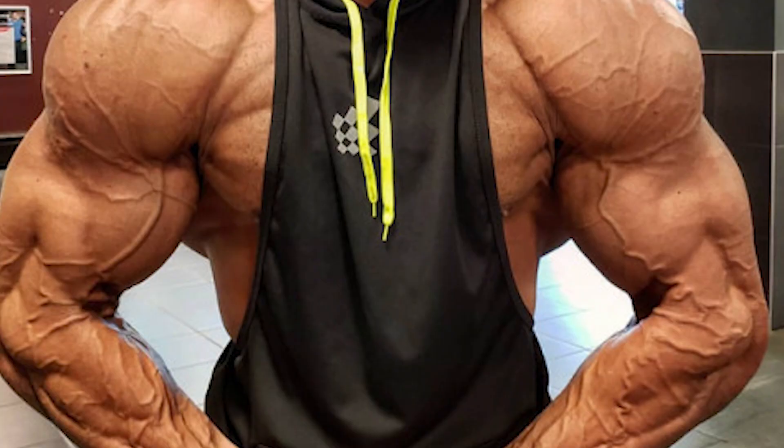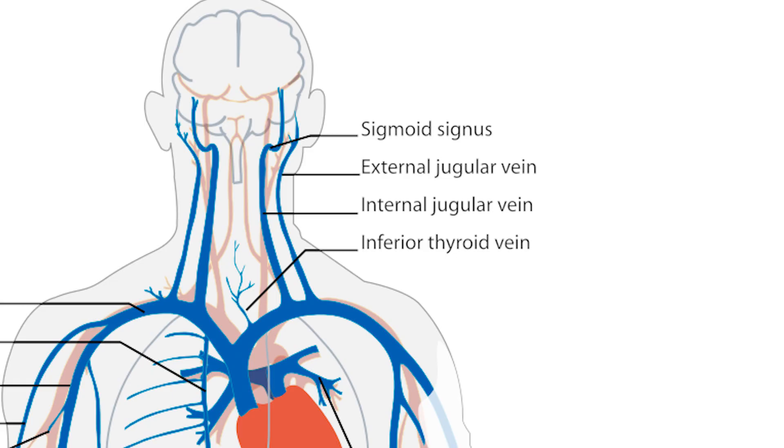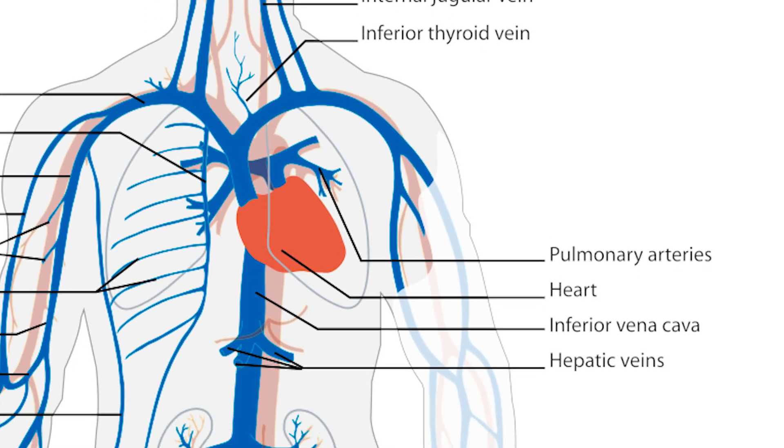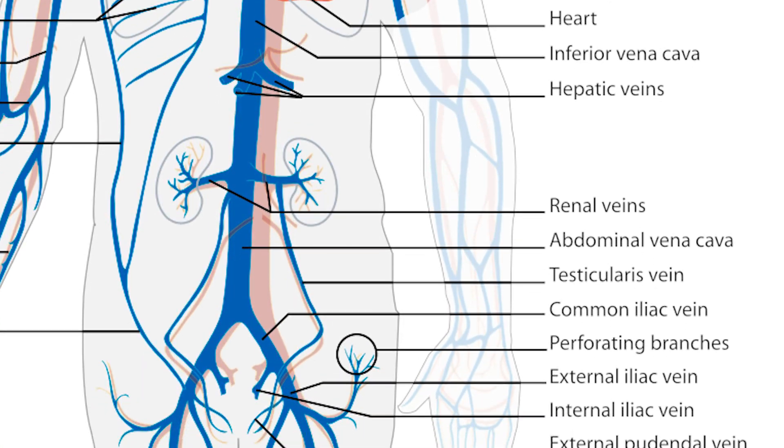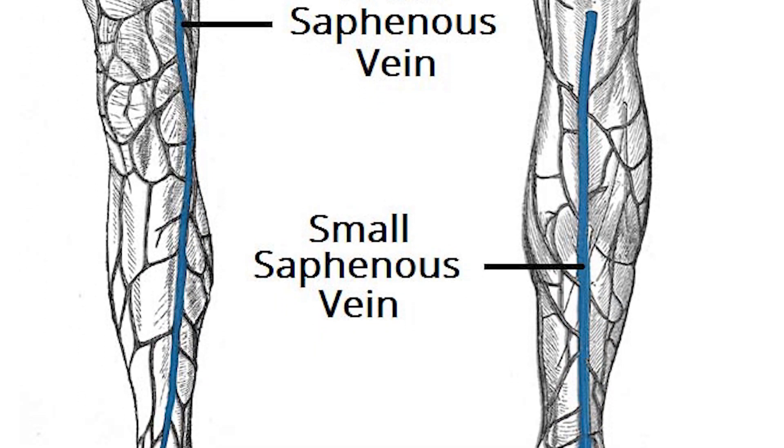Now let's get into why these clots seem to affect the legs and the lungs. In order to understand this, let's quickly go over some aspects of the human circulation. We have veins that you can see on the skin, but these veins are actually very superficial. There's a large network of much deeper and larger veins within the body that drain large organs and tissues. The superficial veins visible from the skin eventually join with the deeper system, and this is where the term deep vein and deep vein thrombosis comes from.